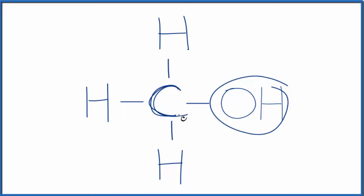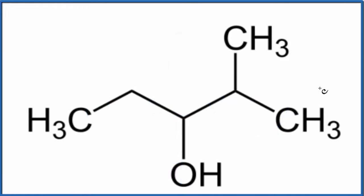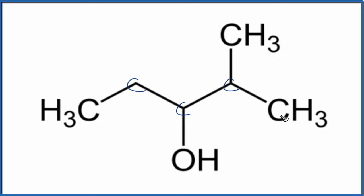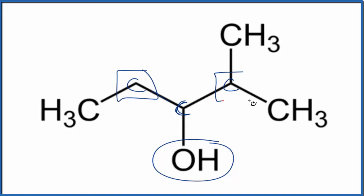Here's one that's written a little differently, in a more skeletal format. The trick here is we have carbons at these junctures. So is this a primary, secondary, or tertiary alcohol? If we find the OH group, it's bonded to this carbon right here, which is bonded to one, two other carbons. That makes this a secondary alcohol.